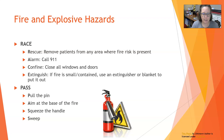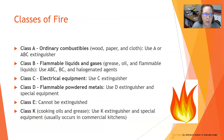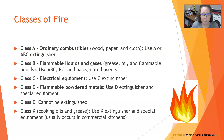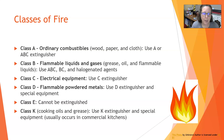The PASS acronym describes how to operate a fire extinguisher: Pull the pin, Aim at the base of the fire, Squeeze the handle, and Sweep back and forth. Fire classes: Class A are ordinary combustibles — wood, paper, cloth — use an A or ABC extinguisher. Class B are flammable liquids and gases such as grease, oil, or alcohol — use ABC, BC, or halogenated agents. Class C is electrical equipment — use a C extinguisher. Class D is flammable powdered metals — use a D extinguisher with special equipment.